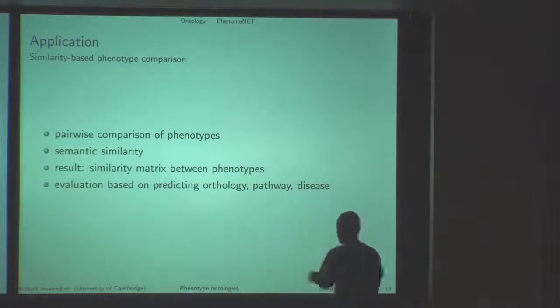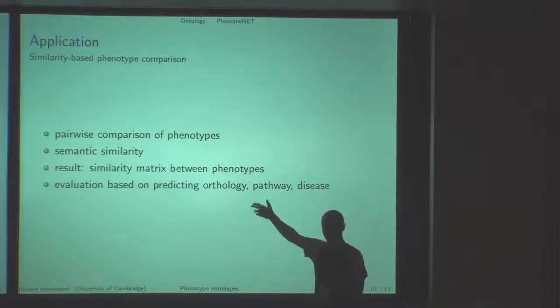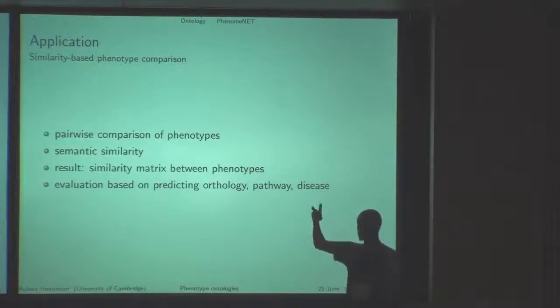Then we get a similarity matrix, and there's another cool feature: this gives us the possibility to evaluate what we have done based on predicting known ortholog genes, known ortholog genes which participate in a pathway across species, and maybe even known gene-disease associations.